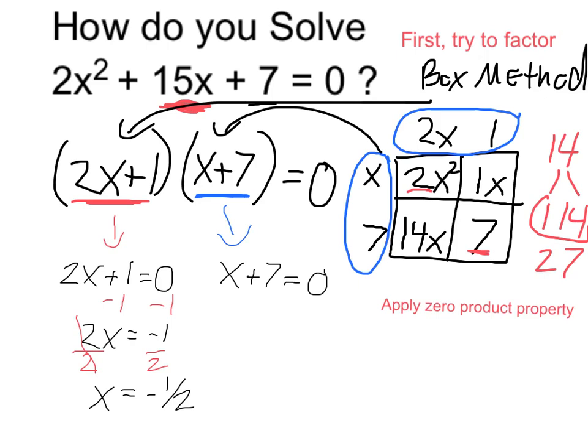In the case where x plus 7 equals 0, I can just subtract 7 on both sides of this little equation, and I see that x would have to be negative 7.